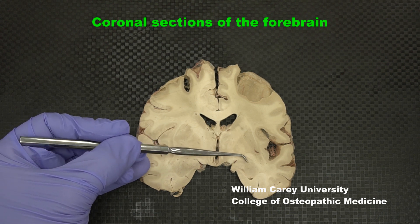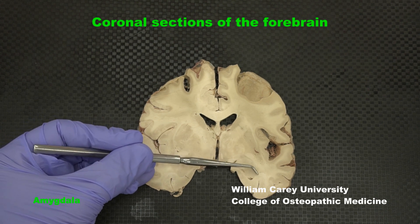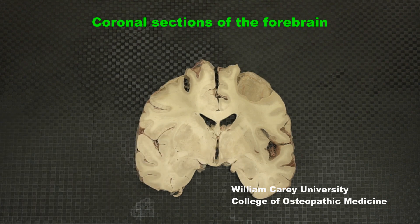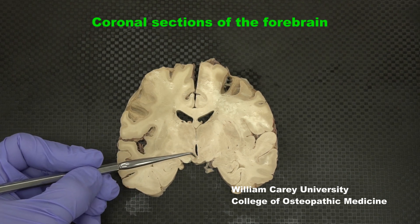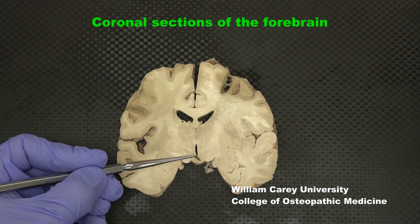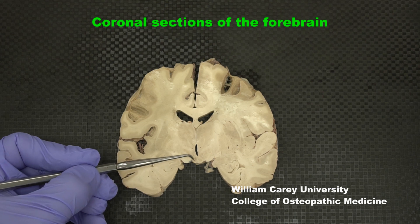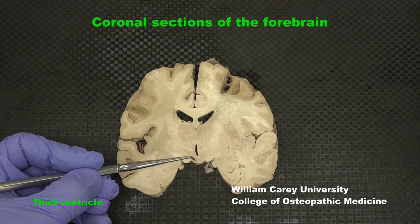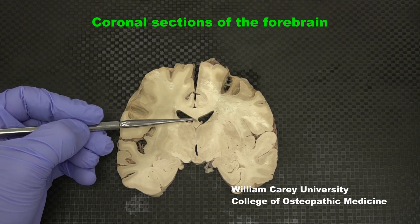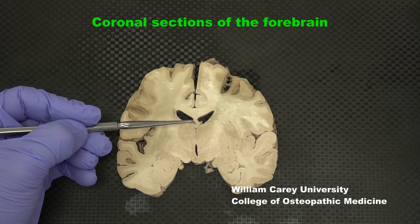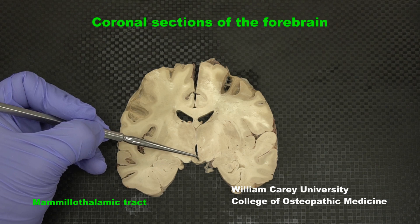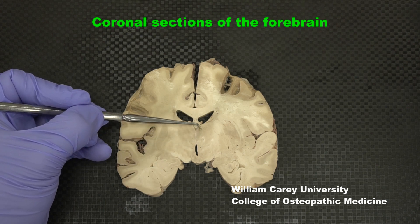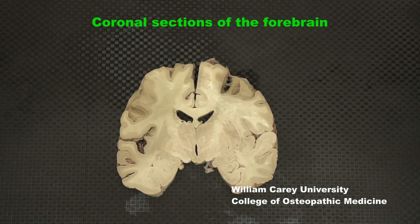More laterally and ventrally, in the medial temporal lobe, is the complex of the amygdala. Our final level in this rostrocaudal sequence is the mammillary body level of hypothalamus. As I'm pointing to the mammillary bodies sitting ventrally underneath the third ventricle, we can identify this level. The columns of the fornix are visible here more dorsally, and also the mammillothalamic tract sweeping up from the direction of the mammillary bodies toward the anterior nuclei of the thalamus.